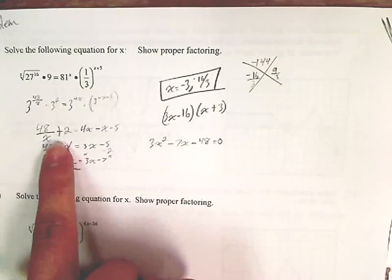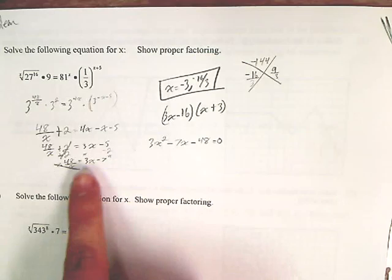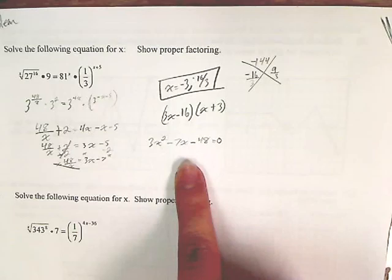Then I subtracted 2 on both sides, then you multiply x, so it'll come out to be 48 equals 3x minus 7.